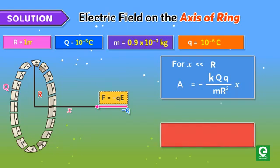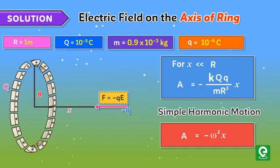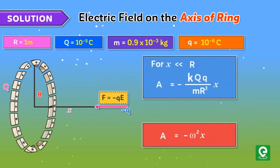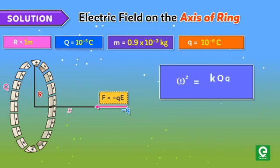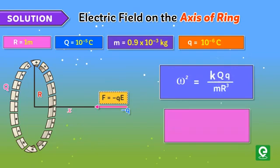This is similar to the general equation of simple harmonic motion a = -ω²x. This implies that the motion of this particle is simple harmonic in nature. Comparing the above equations, we get ω² = kQq/(mR³), or ω = √(kQq/mR³).